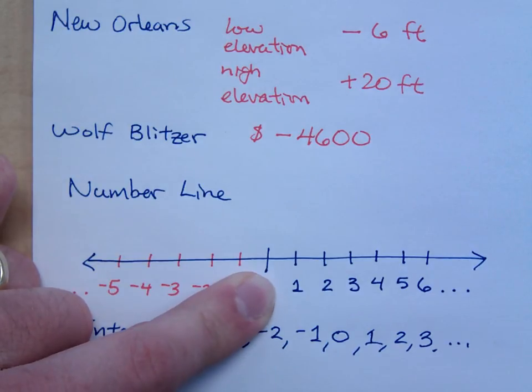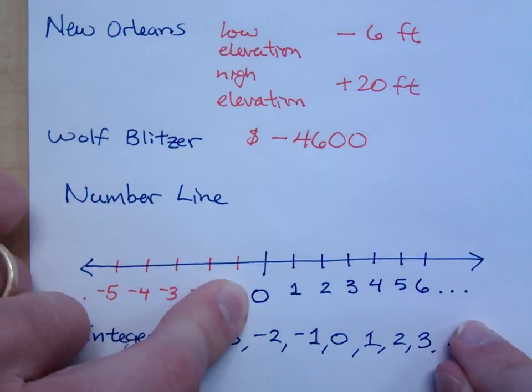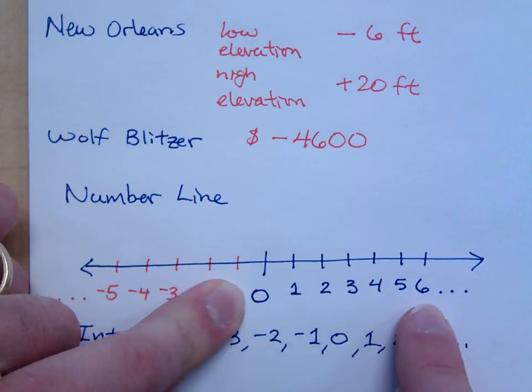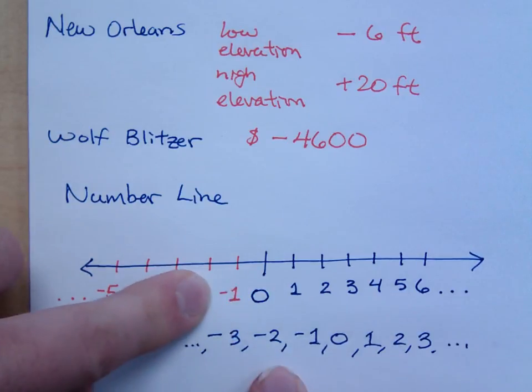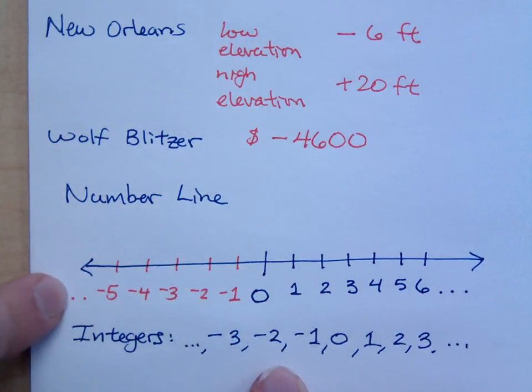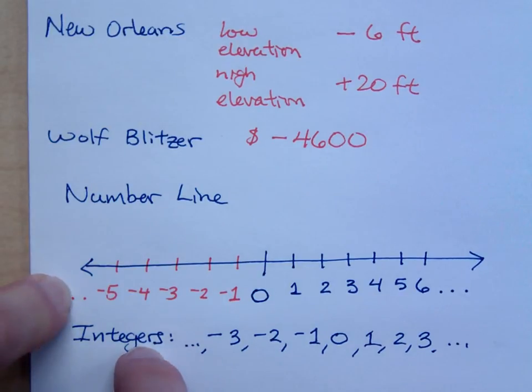When I add zero into the mix, then I have what over here? Whole numbers. When I add in the negatives of the whole numbers, what do I create? The set of integers. Integers are those positive and negative whole numbers that we have.